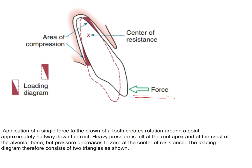There is a single force being applied away from the center of resistance, so the loading diagram for tipping shows two triangles — the areas getting loaded. Heavy pressure will be felt at the apex of the root, which is going to tilt labially, and at the crest of the alveolar bone on the lingual side. These two areas are the ones being compressed. The loading diagram for tipping has two triangles, meaning only half the area of the PDL is being used.